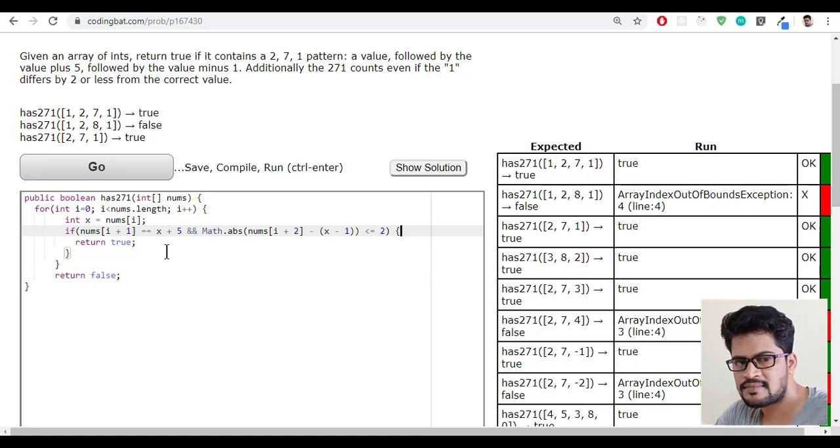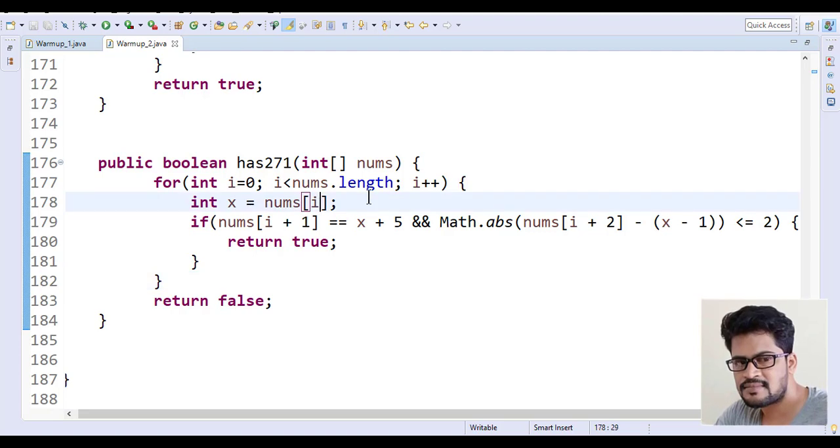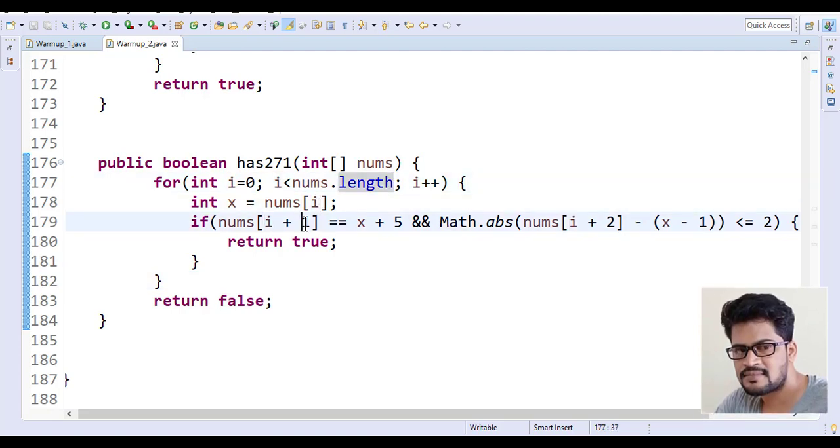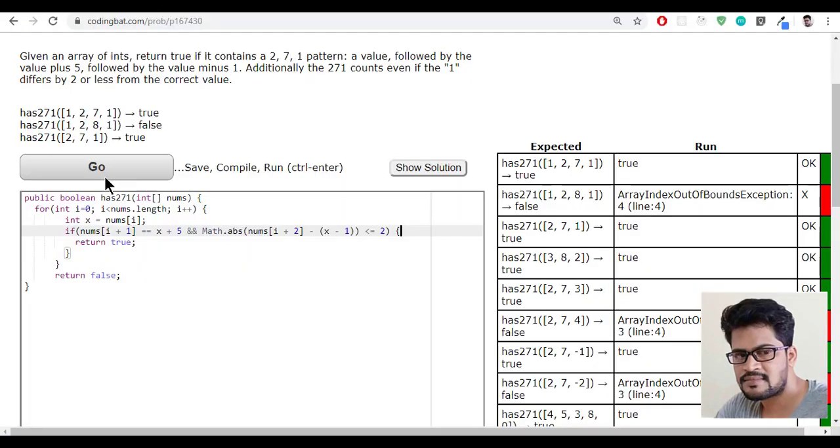Actually, the thing is, what if the i value is the last element? So i plus 1 out of bound, i plus 2 out of bound. So you can just make minus 2, nums dot length minus 2. Let me do here also minus 2. Now go. Yes, all success.